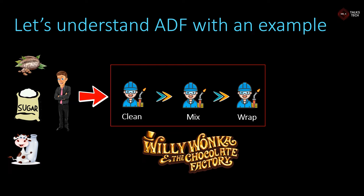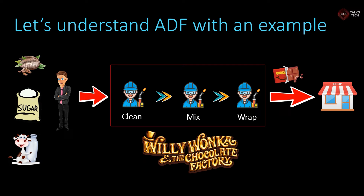The workers are the ones actually making the chocolate, but the key thing to note is that the manager doesn't do any actual work in making it. Instead, he manages the workers to ensure they are doing their work correctly and in the right order, and he is also responsible for getting all the raw materials from the dealers. At the end of the third step — wrapping — we finally have a chocolate that is sent to the shop where the end user can buy it.